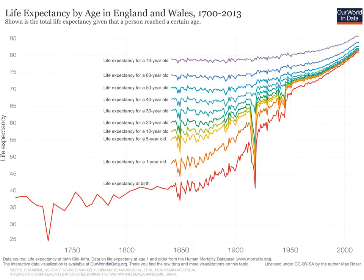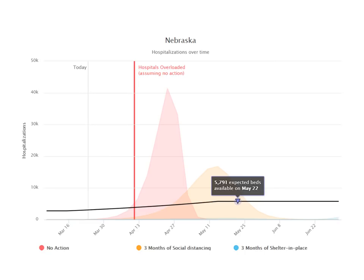My biggest concern right now is that people are not getting the message. Some are still taking a 'let it rip' mentality. I use the United Kingdom as an example — they made that decision and may have changed their mind too late. An epidemic can have a bigger impact on population mortality than World War One or World War Two. The second dip in the chart is the 1918 influenza, which is as big or bigger than World War One and bigger than World War Two. Letting it rip is a very bad idea.